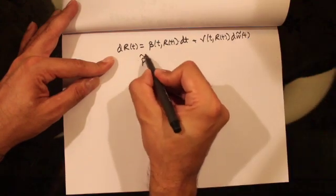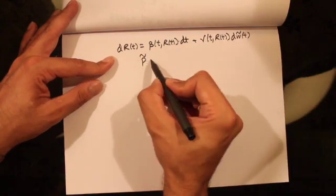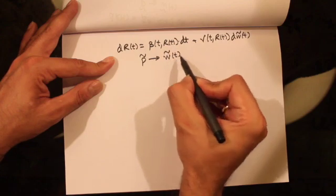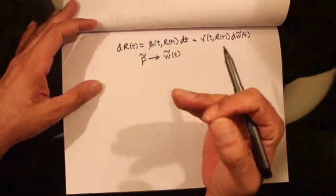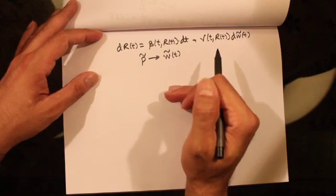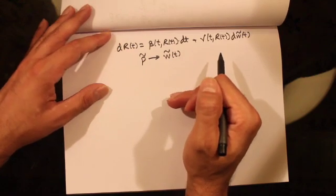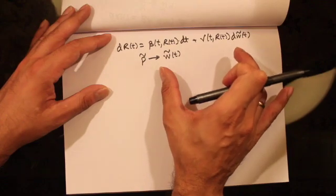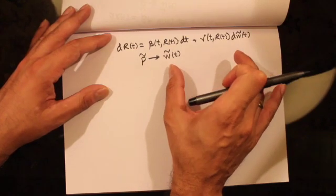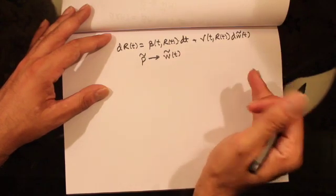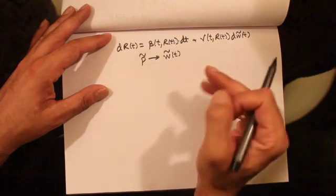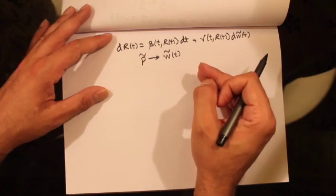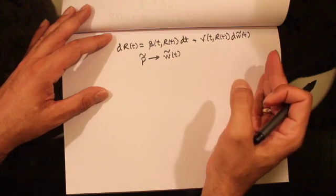We have a risk neutral measure given by P̃, and under P̃, W̃(t) is a Brownian motion and the discounted value of all assets are a martingale. If you were to construct a portfolio with these assets, the discounted value of the resulting portfolio under the risk neutral measure would also be a martingale, and that would guarantee there is no arbitrage in the model.